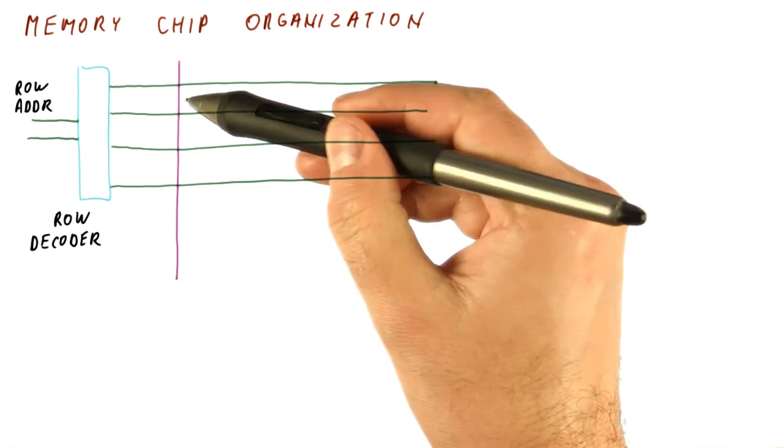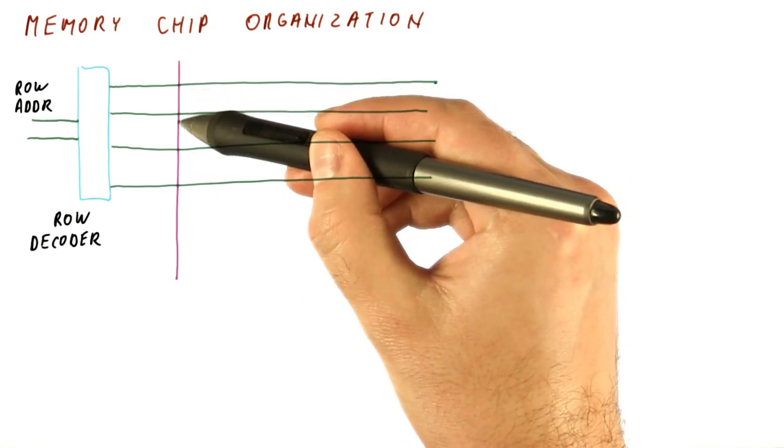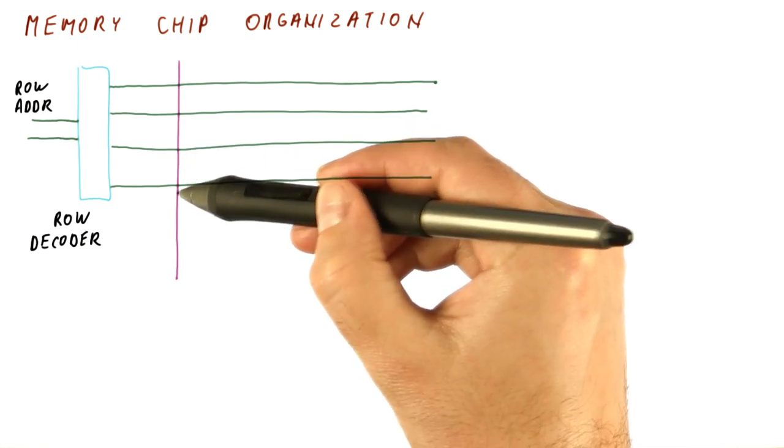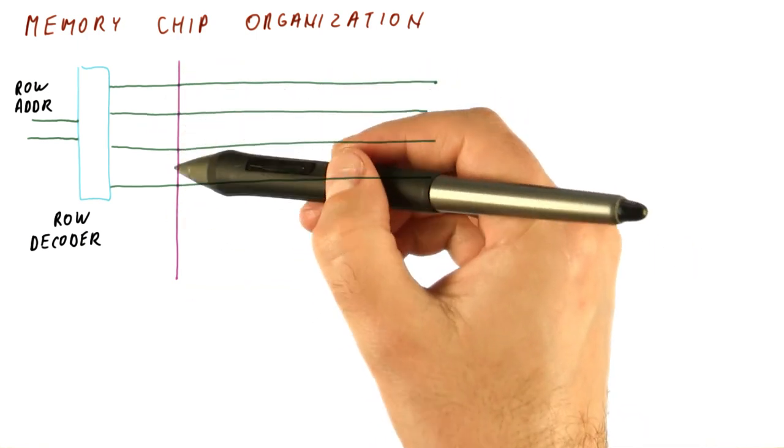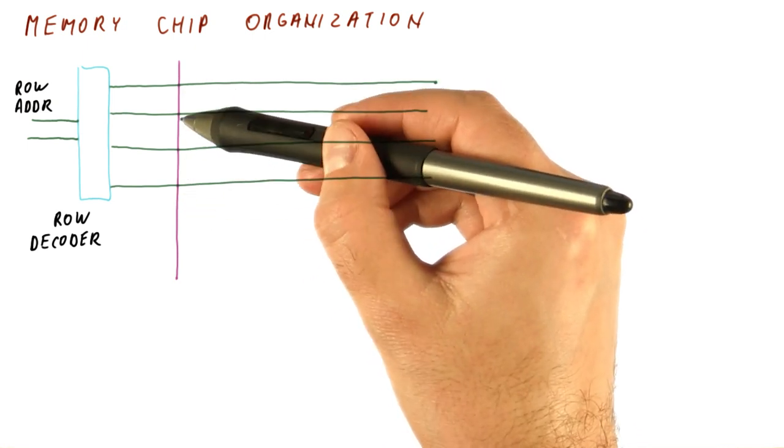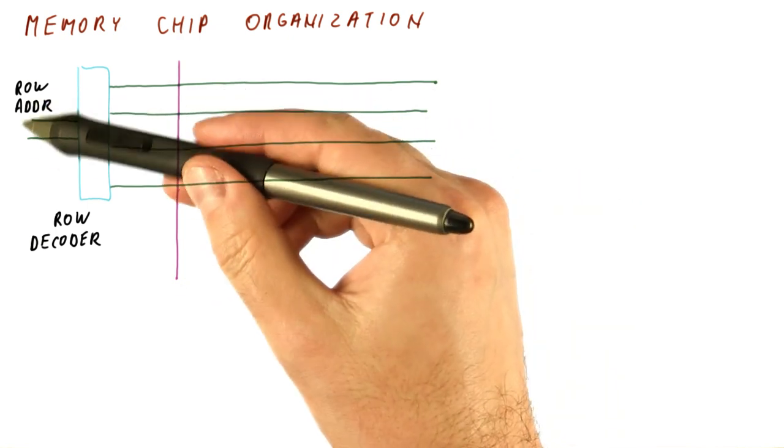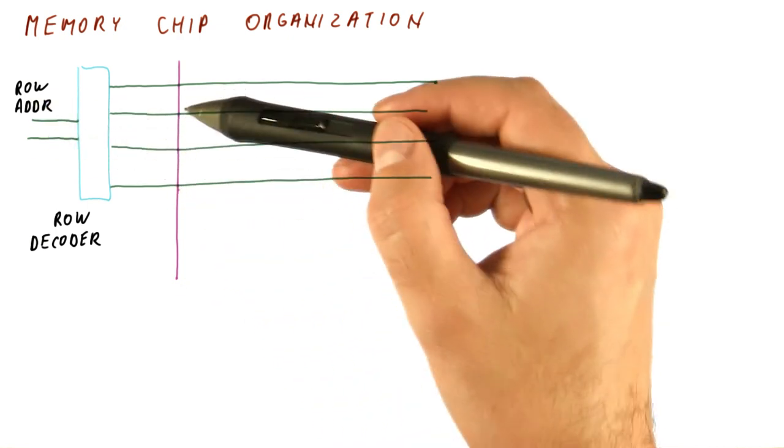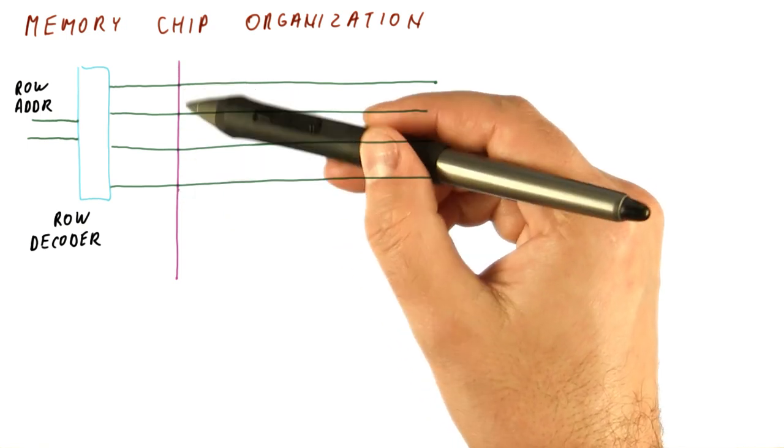There is also a bit line here, and if you remember, a memory cell exists at every intersection between this bit line and a word line. So what the word line does is it connects this cell, this cell, this cell, or this cell to the bit line. So by supplying, let's say, two bits of the address, we choose which of the four bits would be outputting on this one bit line.